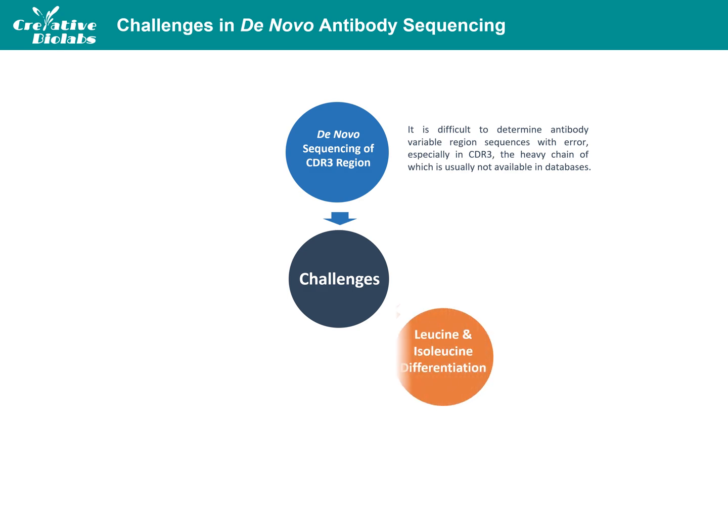The second challenge is the differentiation between leucine and isoleucine. These amino acids are generally considered to be indistinguishable by mass spectrometry due to their same mass and similar chemical properties. This makes it difficult to differentiate between the two residues, and this can impose serious consequences on the overall performance of the antibody's specificity and affinity.